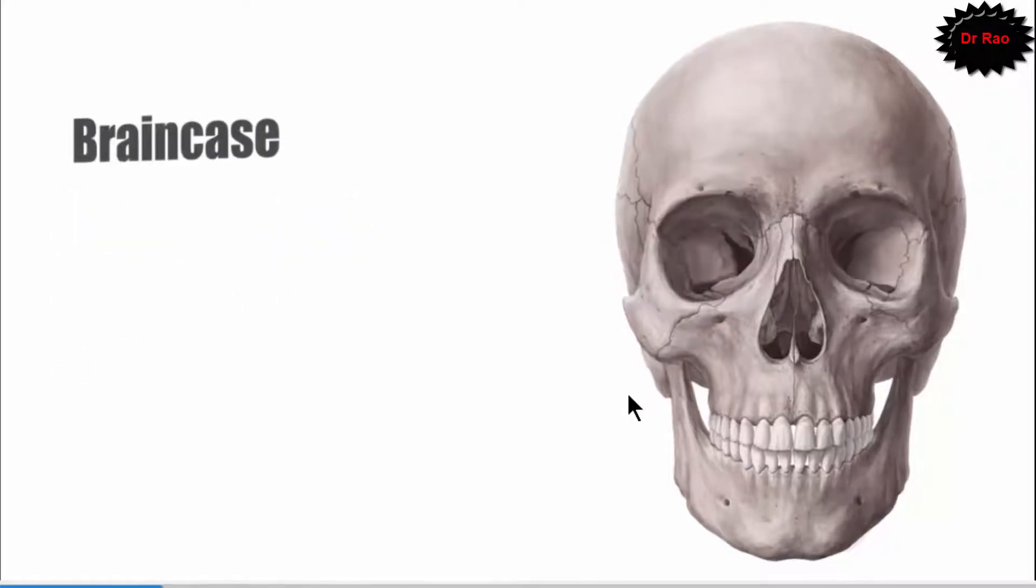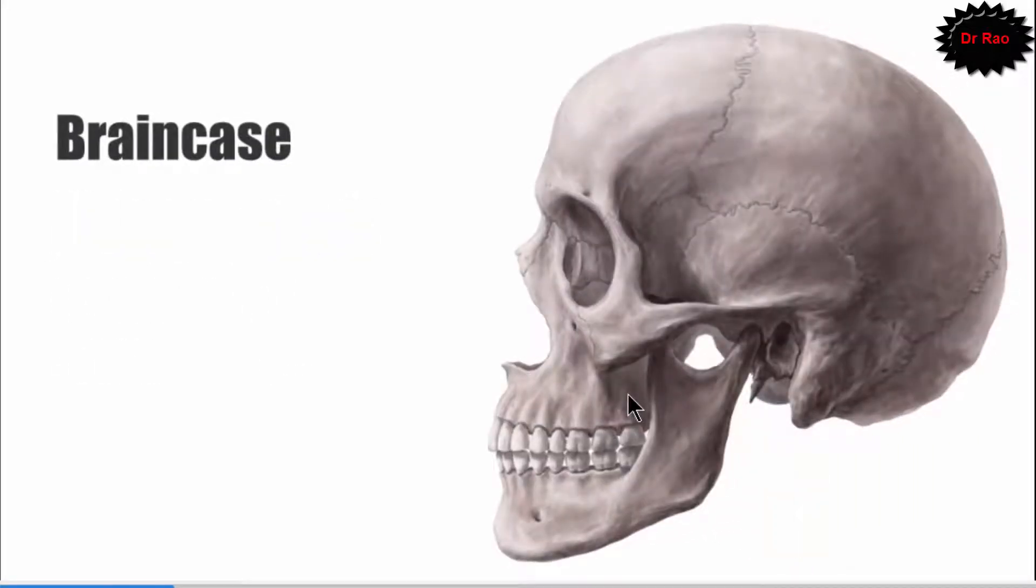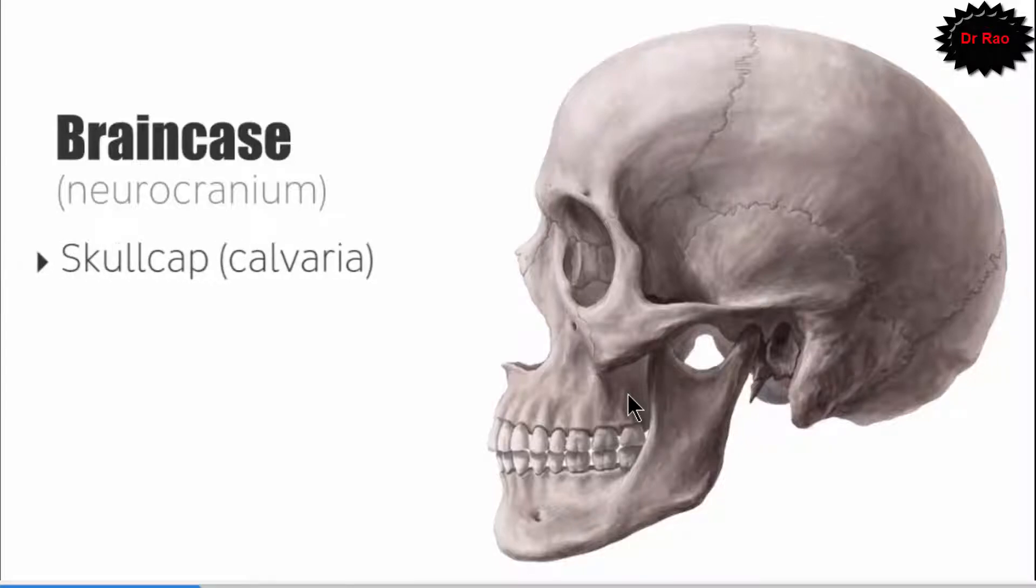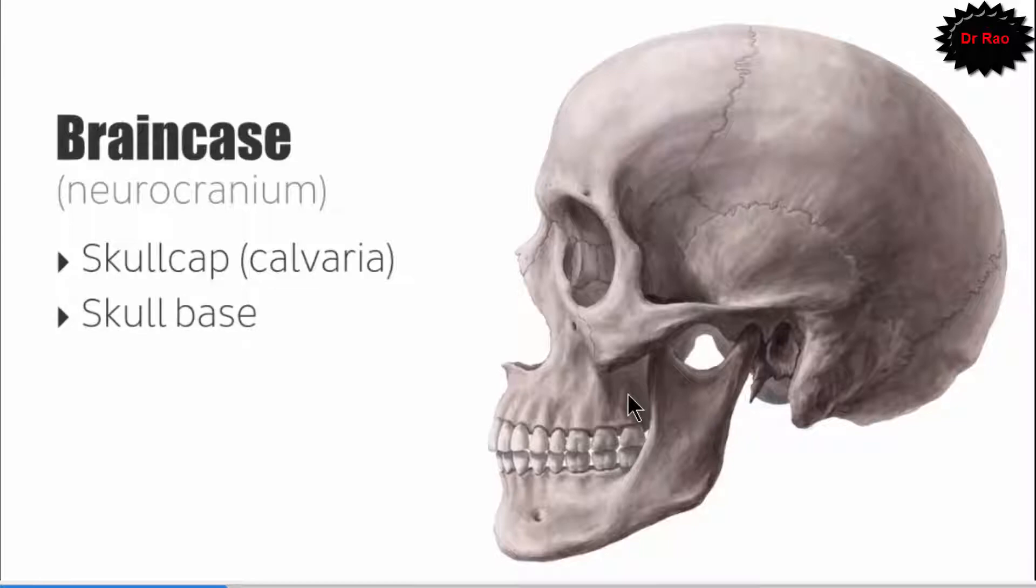The human skull consists of the brain case and face. The brain case is the neurocranium, consisting of the skull cap and skull base. The next one is the face, that's called the viscerocranium.